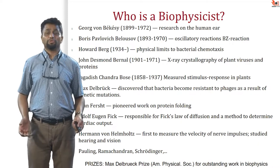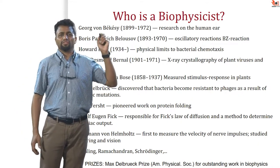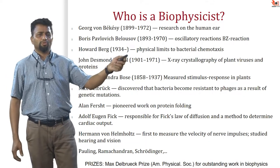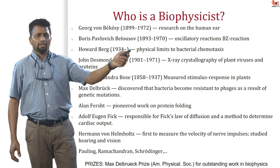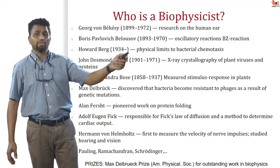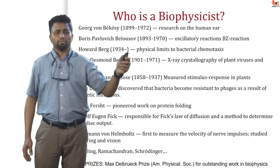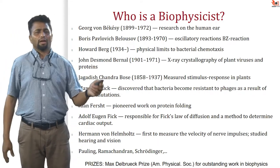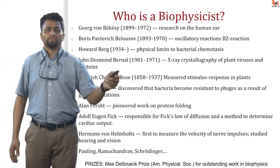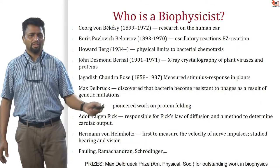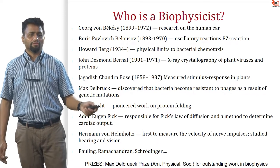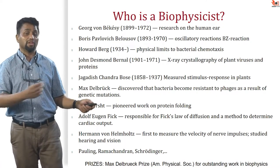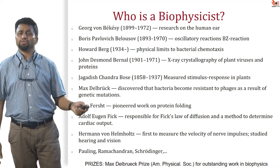If you finish such a course and say you are a biophysicist, then who are the predecessors, the illustrious examples? You can look at George von Bekessy, who did research on the human ear and hearing; Boris Pavlovich Belusov, of Belusov-Zhabotinsky reactions; Howard Berg, who discussed the physical limits to bacterial chemotaxis; J.C. Bose, who measured stimulus response in plants; Max Delbruck, who discovered that bacteria become resistant to phages as a result of genetic mutations; Alan Furst, who pioneered work on protein folding; Adolf Fick, responsible for Fick's laws of diffusion and cardiac output; Hermann von Helmholtz, who first measured nerve conduction velocity and studied hearing and vision; and Pauling, Ramachandran, and Schrödinger — the list goes on.